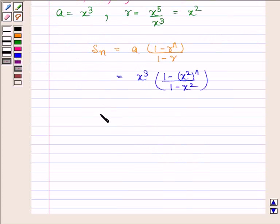Hence the required sum is x cube into 1 minus x to the power 2n upon 1 minus x square. This is our required answer.